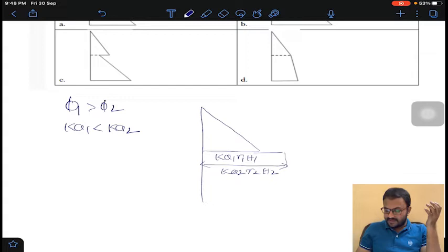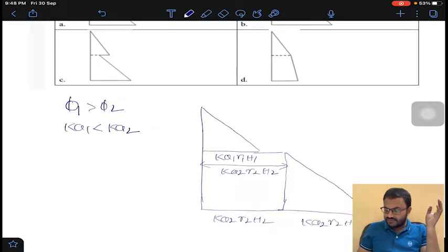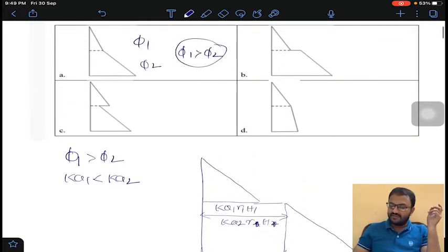It will move the same amount as surcharge. One layer's weight is acted upon by another layer as a surcharge, that is Ka2 gamma 1 h1. Coming to the second layer, it will be Ka2 gamma 2 h2. So for this question, option B will become the correct answer.